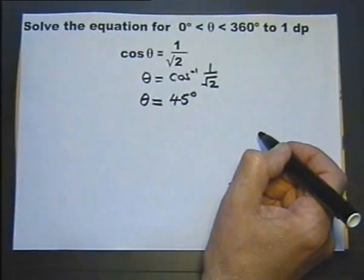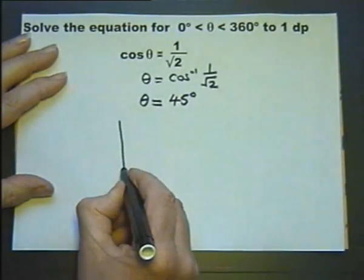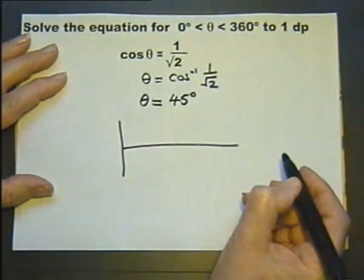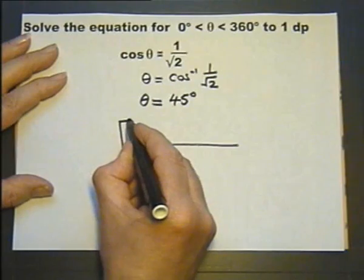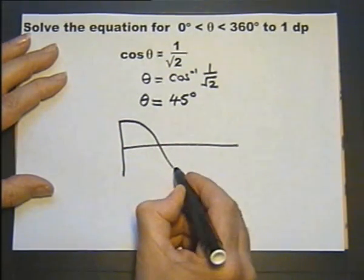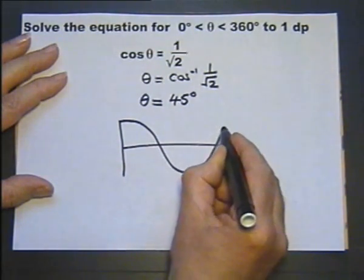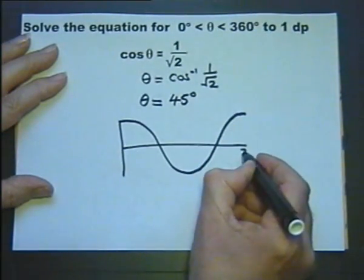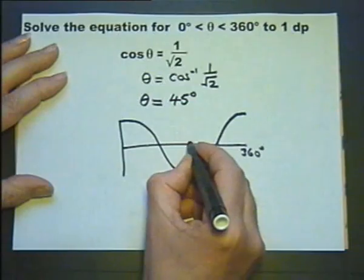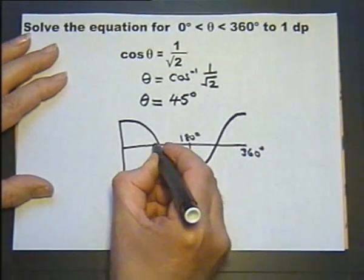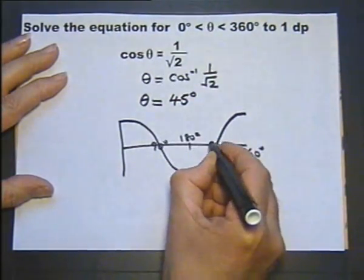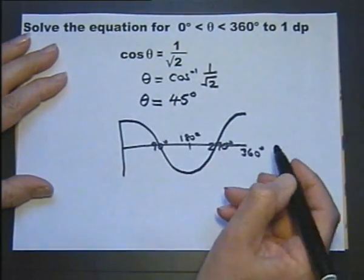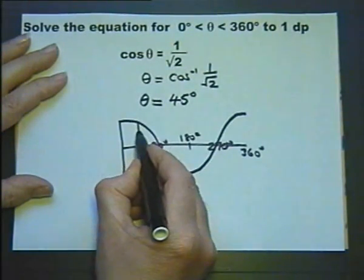But that's only one possible answer. To find the other possible answer we draw a sketch, and our sketch is of the cosine curve. That will do nicely. That's 360 degrees, 180 degrees, 90 and 270. We're talking 45 degrees which is there.